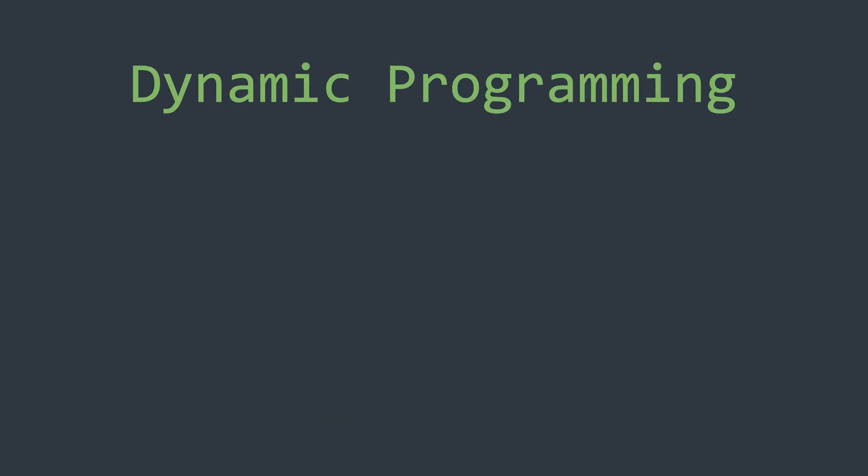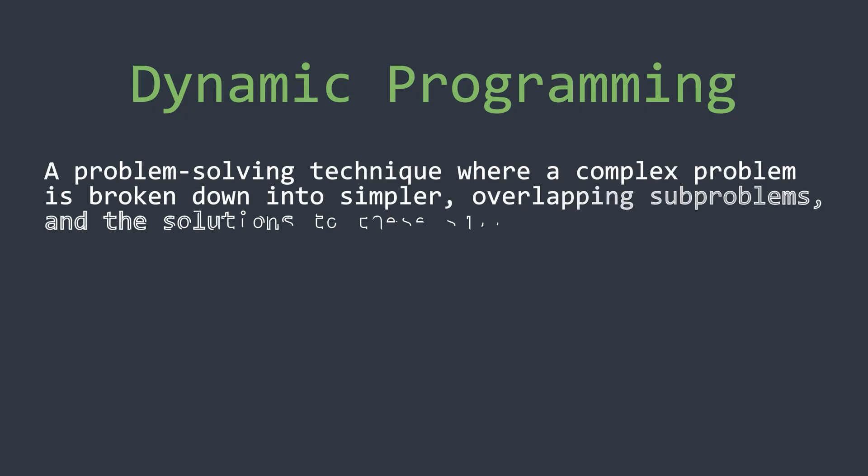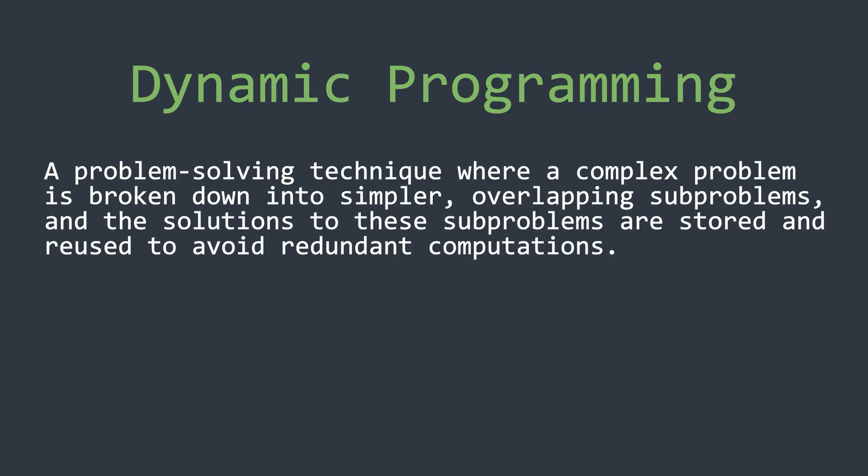So, using this example, we have got a basic understanding of dynamic programming. In short, it's an optimization technique where a problem is broken down into simpler overlapping sub-problems and then the solutions are stored and reused for efficiency. Now it has two main approaches. One is memoization which is a top-down approach that uses recursion.